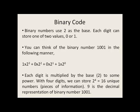You can think of the binary number 1001 in the following manner: 1×2³ + 0×2² + 0×2¹ + 1×2⁰.